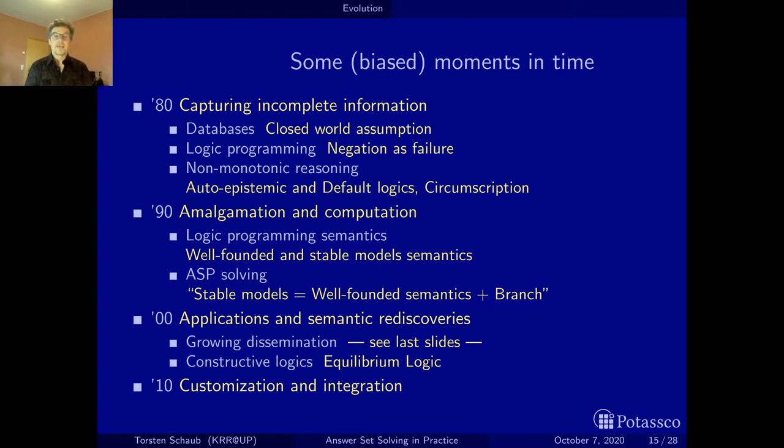We have seen the number of applications in the last section. What was most astonishing, particularly in retrospective now, is that David Pierce discovered that the semantics of the stable model semantics can be traced back to a logic that was investigated by Heyting and Gödel independently at the beginning of the 90s—the logic of here and there. He defined then equilibrium logic from this, which is exactly the logic we are dealing with.